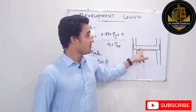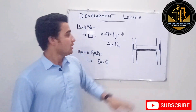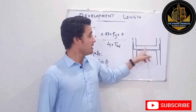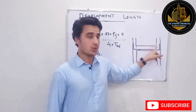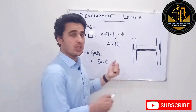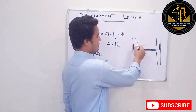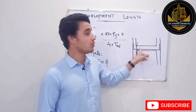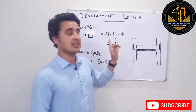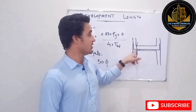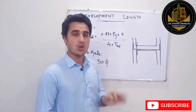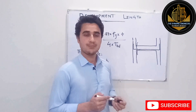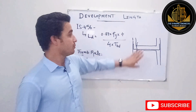Why do we need it? This beam has to transfer its load to these columns. If you just finish the steel at the face of the column, there is no way to transfer the load from the beam to the column. So the development length is the responsible part for transferring the load from the beam to the column.